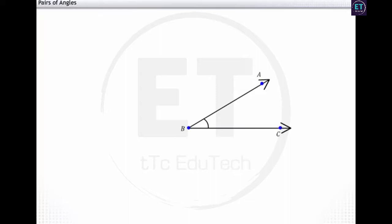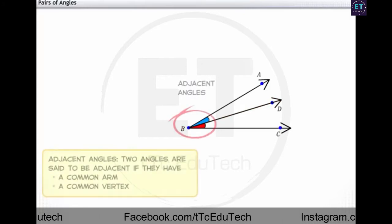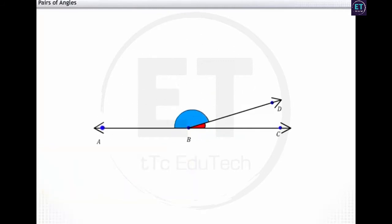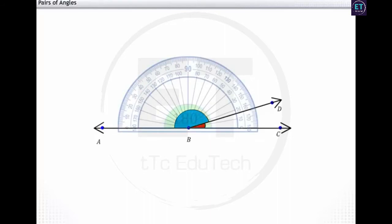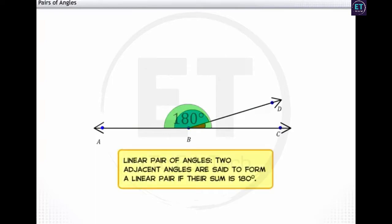Consider the angle ABC. Pass the ray BD through the vertex such that it divides the angle ABC into 2. The two angles that are formed are angle ABD and angle DBC. These angles have a common arm BD and a common vertex B. Two angles are said to be adjacent if they have a common arm and a common vertex. Observe the adjacent angles ABD and DBC. The sum of these angles is equal to 180 degrees. Such a pair of angles is called a linear pair. Here the common arm is BD, and the non-common arms BA and BC form a straight line AC.